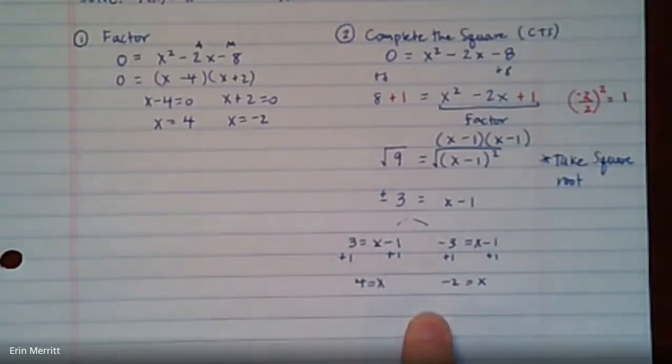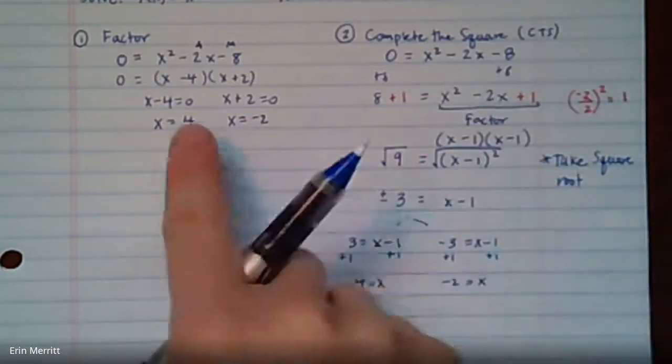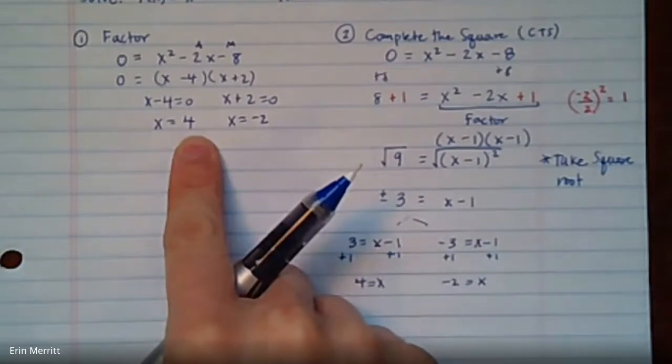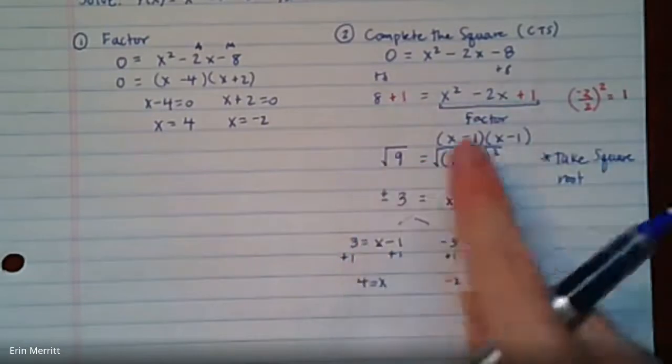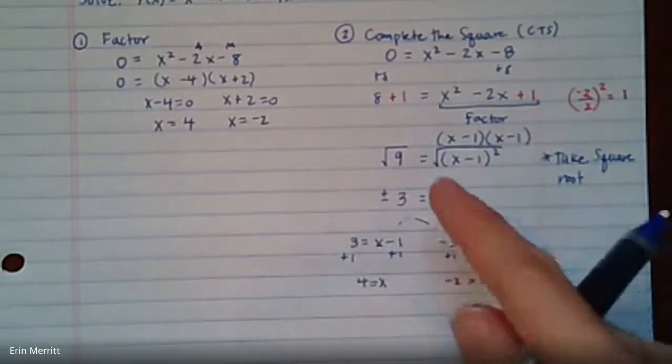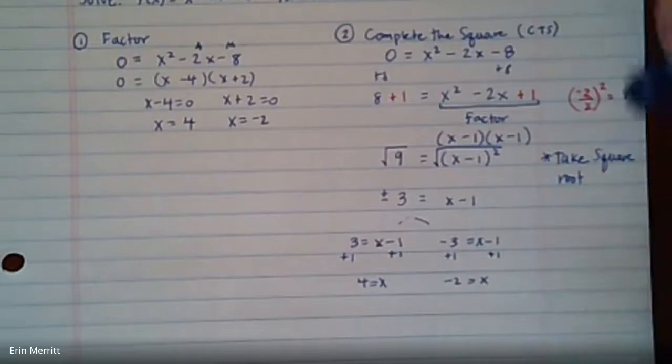So I get the same answers. In this case did it take more work? Yeah. So if it's factorable, heck yeah I would choose the factoring. But if it's not factorable, this is another method that you can actually use. Or even if it is factorable and you like completing the square, go for it.